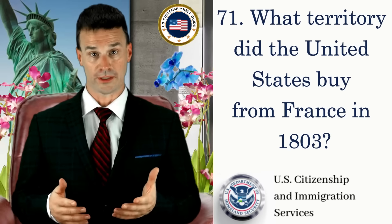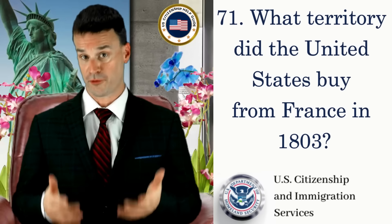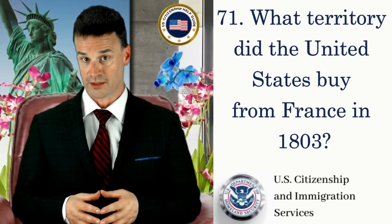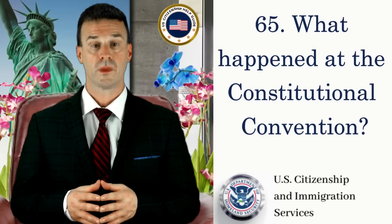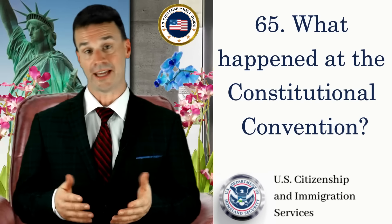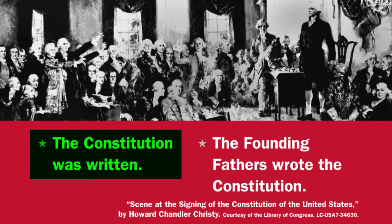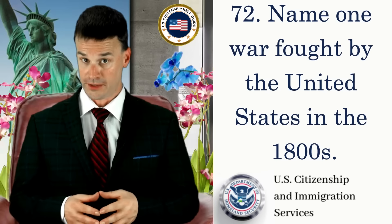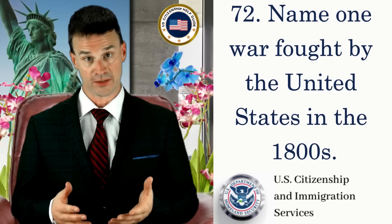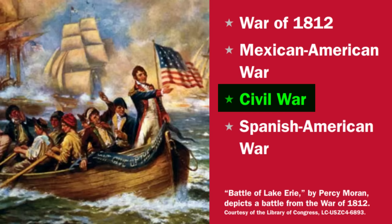What territory did the United States buy from France in 1803? Louisiana. What happened at the Constitutional Convention? The Constitution was written. Name one war fought by the United States in the 1800s. Civil War.